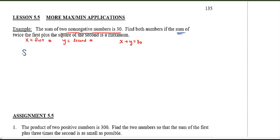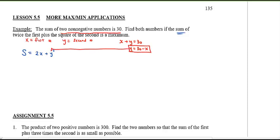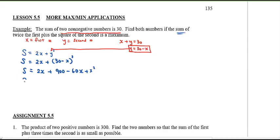What do we try to maximize? The sum of twice the first plus the square of the second. Two variables isn't ideal, so we'll solve for y and substitute into the primary equation: S equals 2x plus (30 minus x) all squared. Expanding this out gives us 900 minus 60x plus x squared, and we'll put the x squared term in front.